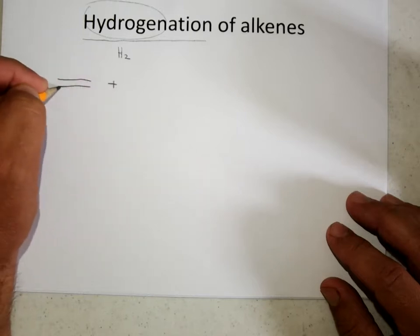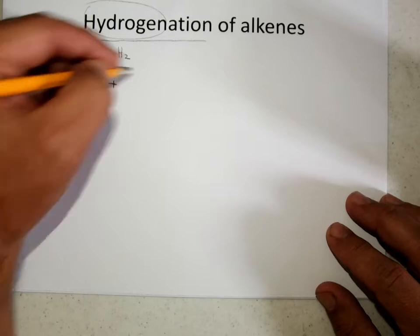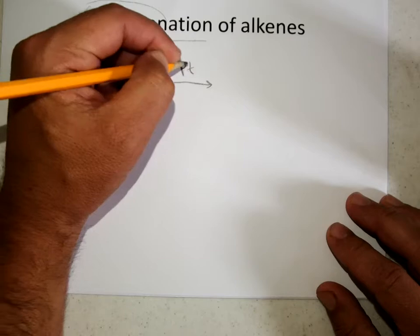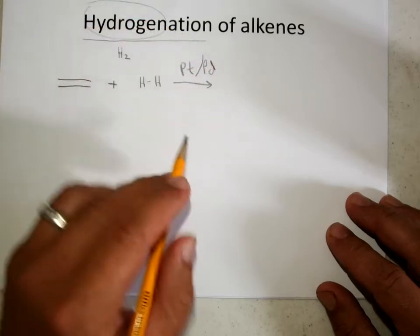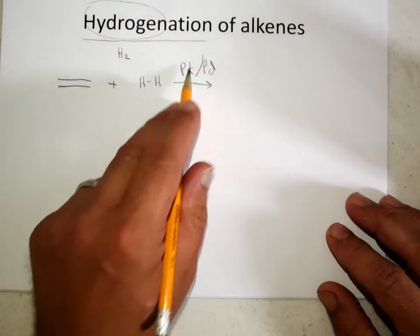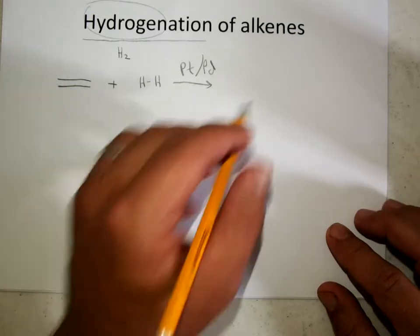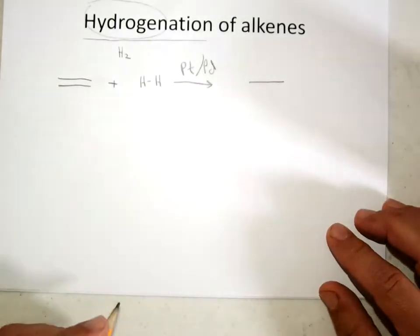So you're going to take an alkene, like ethylene here, add hydrogen, and the catalyst is going to be platinum or palladium or some other reagent that helps to activate both the alkene and the hydrogen, and that'll just give you the alkane.